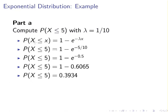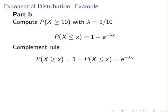The neater version: P(X ≤ 5) = 1 minus e^(−0.5) ≈ 0.6065, so the probability is 0.3935. There may be slight rounding differences depending on how you round on your calculator, but the result is approximately 39%.